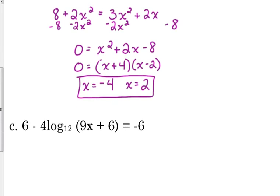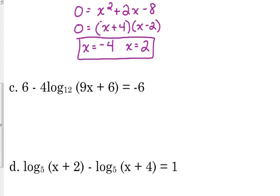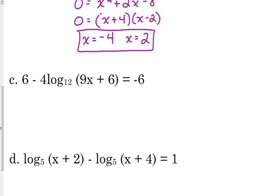Now, really quickly, what happens if we don't have a log on both sides? Well, we're going to handle it the way we did with the other exponential equations. We're going to get this equal to 0 and we're going to graph it. So we're going to add 6 to both sides. So we've got 12 minus 4 log base 12 of 9x plus 6 is equal to 0. And we'll pick up tomorrow with how to type that into our calculator.